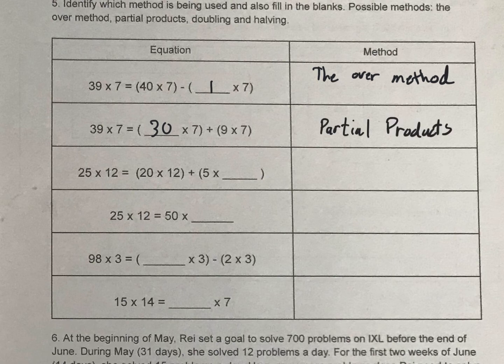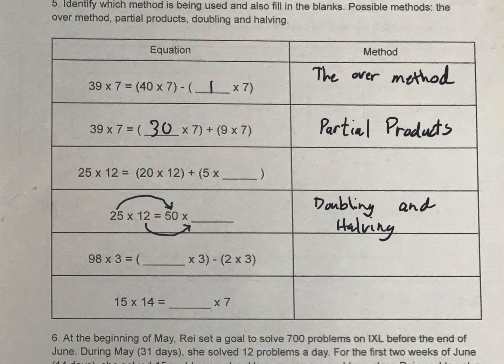The next one I'll let you do on your own. But over here we have 25 times 12 equals 50 times what? Well we just doubled 25 to 50. So we must have halved 12. So what is half of 12? You get that. And the method is what we call doubling and halving.